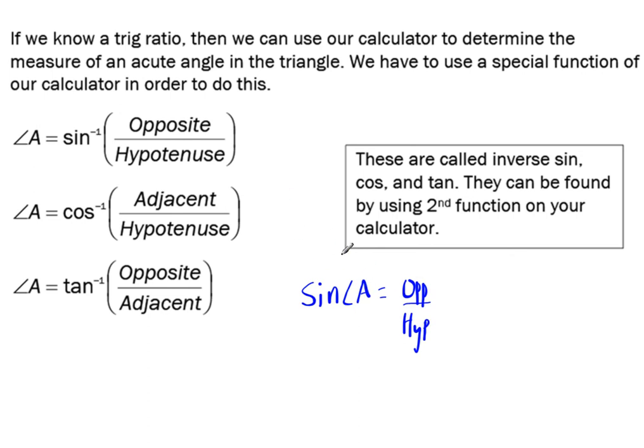So when you want to find that angle A, you have to use a special function of your calculator that often comes from using second function and then pressing sine. So you'll get this thing that comes up, which is called inverse sine. Some people call it sine to the negative one. But what you should know is that when we use that, along with our ratio opposite over hypotenuse, that gives you an angle of a triangle.